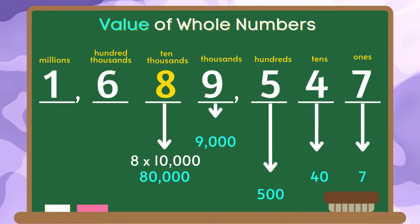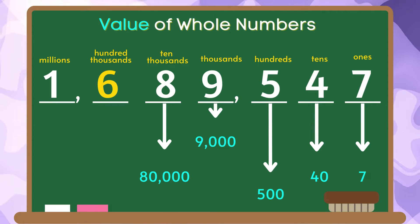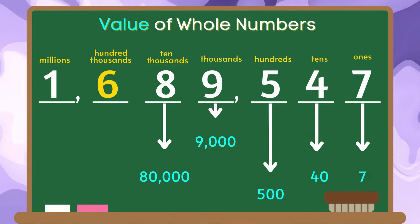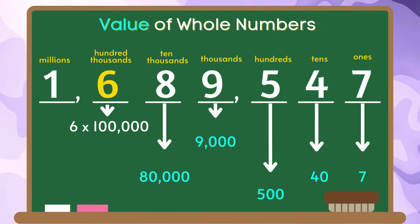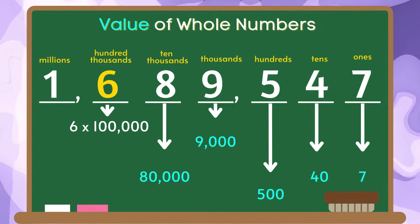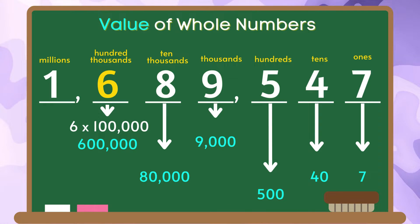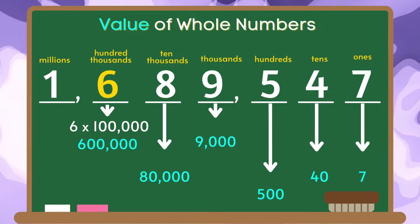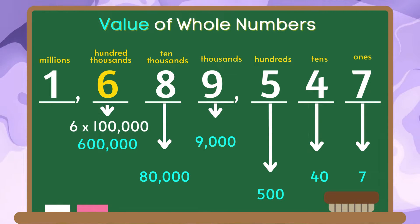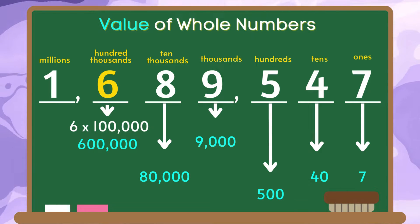The place value of the digit 6 is hundred thousands. We are going to multiply the digit 6 by 100,000. 6 times 100,000 is equal to 600,000. Therefore, the value of the digit 6 in this number is 600,000.